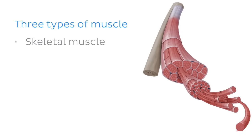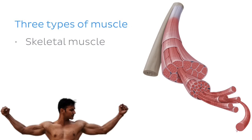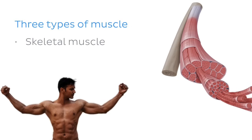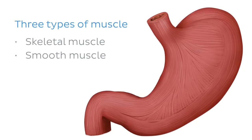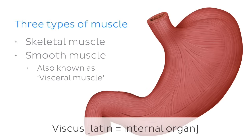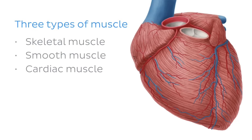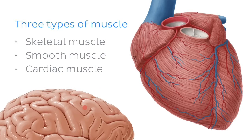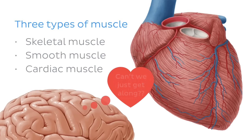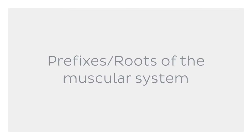Skeletal muscle is generally attached to bone and responsible for voluntary movement of the body — it's probably what you picture when someone mentions muscle. Smooth muscle generally deals with involuntary movements like those related to our organs and vessels; it's also known as visceral muscle. The final group is cardiac muscle, which of course is found in the heart. We all know we have no voluntary control over what the heart does.